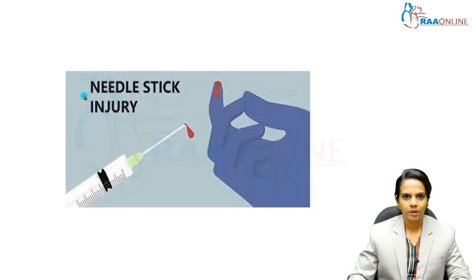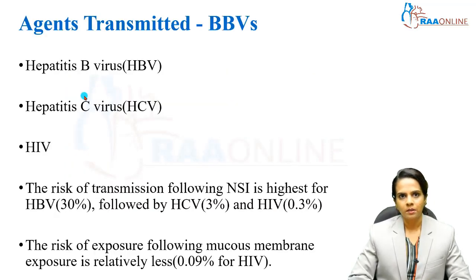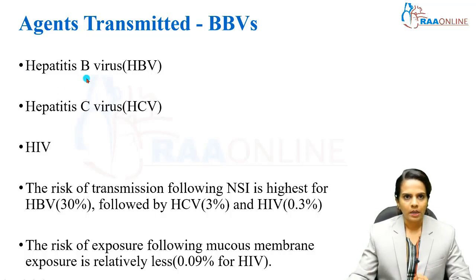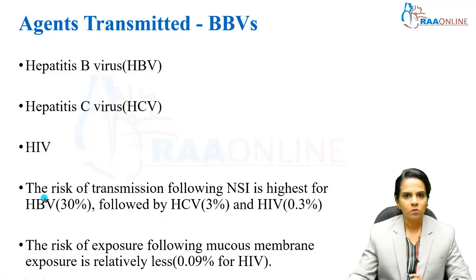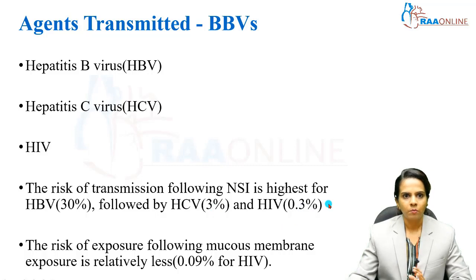Moving on to the agents that can be transmitted by needle stick injury — these are the blood-borne viruses: hepatitis B virus (HBV), hepatitis C virus (HCV), and HIV, the human immunodeficiency virus causing AIDS. The risk of transmission following needle stick injury is highest for hepatitis B virus at 30%, followed by HCV at 3%, and HIV at only 0.3%. You can remember these as 30%, 3%, and 0.3% for HBV, hepatitis C, and HIV respectively.